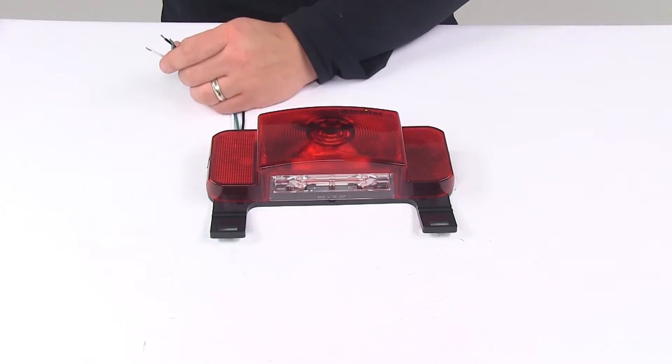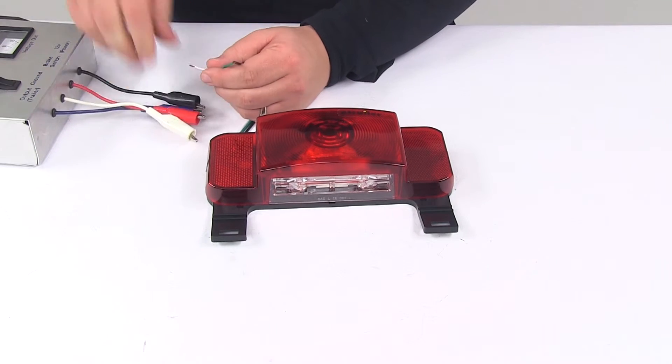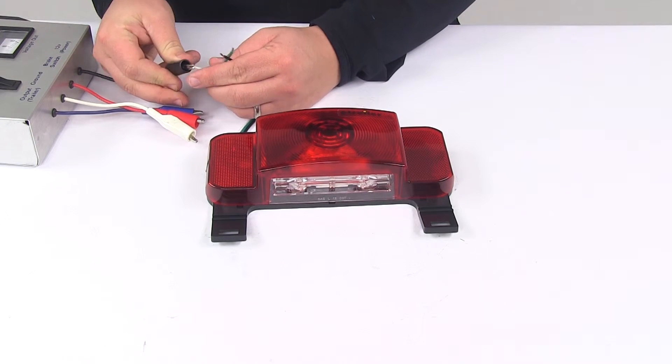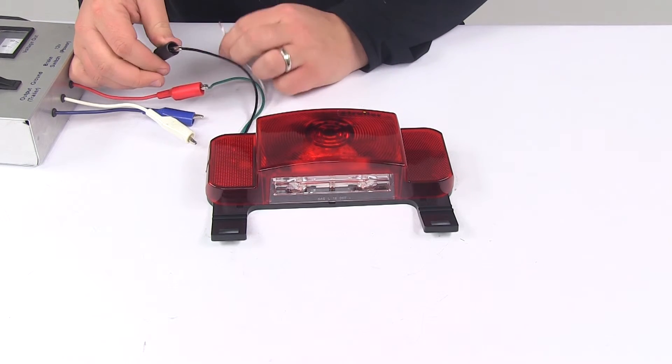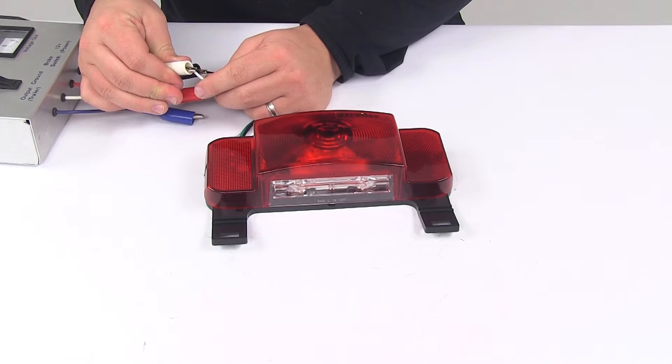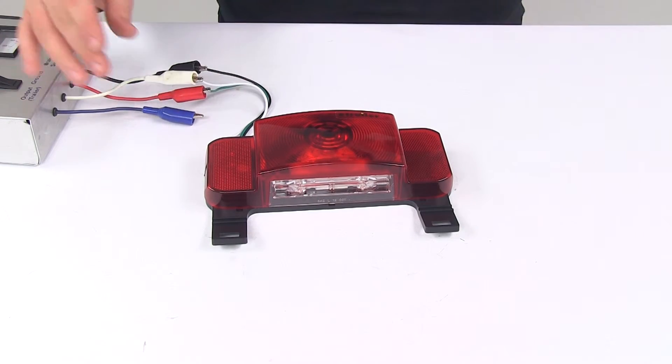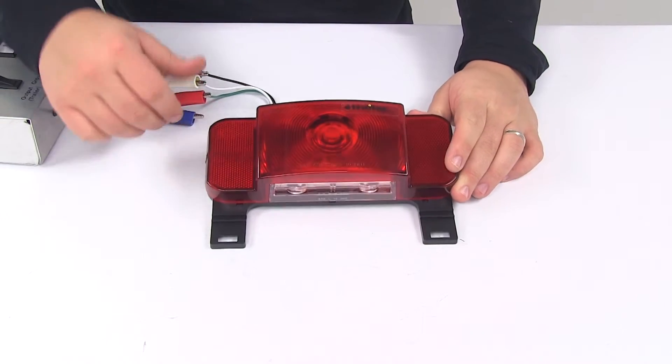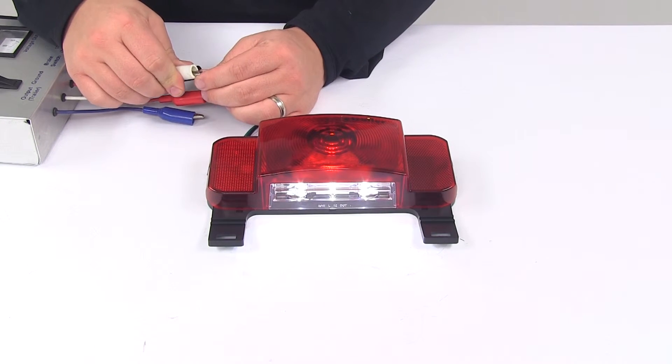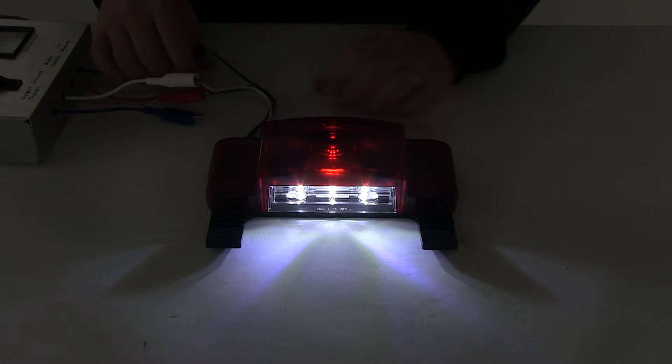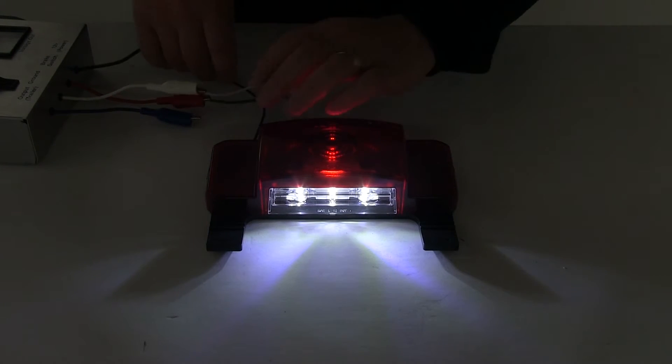We're going to hook it up to our external power source so you can see what it looks like with power running to it. We'll also turn off our overhead lights so you can see it in a low light setting. Just need to make sure our wires aren't crossing, as that interferes with the power and ground.